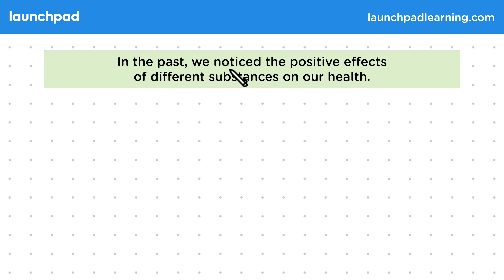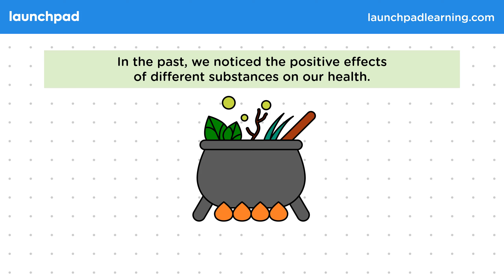In the past, we noticed the positive effects of different substances on our health. We would have discovered the positive and negative effects of different plants on our bodies as people ate them. We would then start trying to take out and concentrate the chemical responsible.